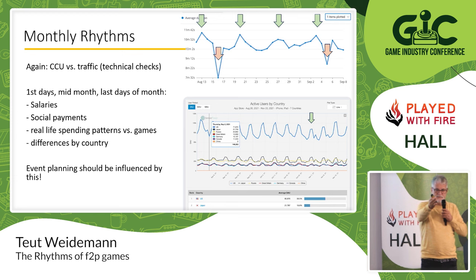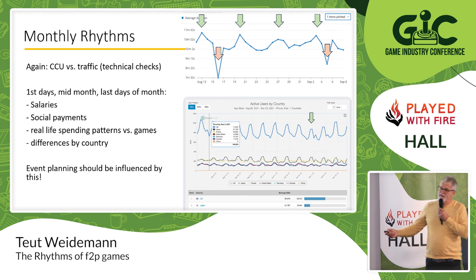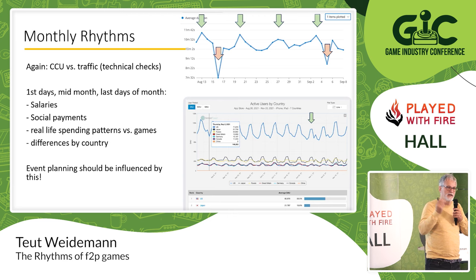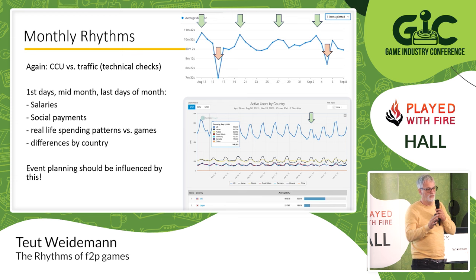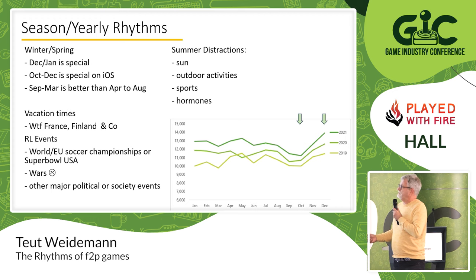There are differences by country. Germany is roughly July until mid-August. France is very different. If you do a major event which introduces new features and rare exclusive heroes or ships, and you only do it in August, you're cutting off a lot of your audience. Try to wiggle around there. Our summer event runs as long as possible in order to cover most countries.